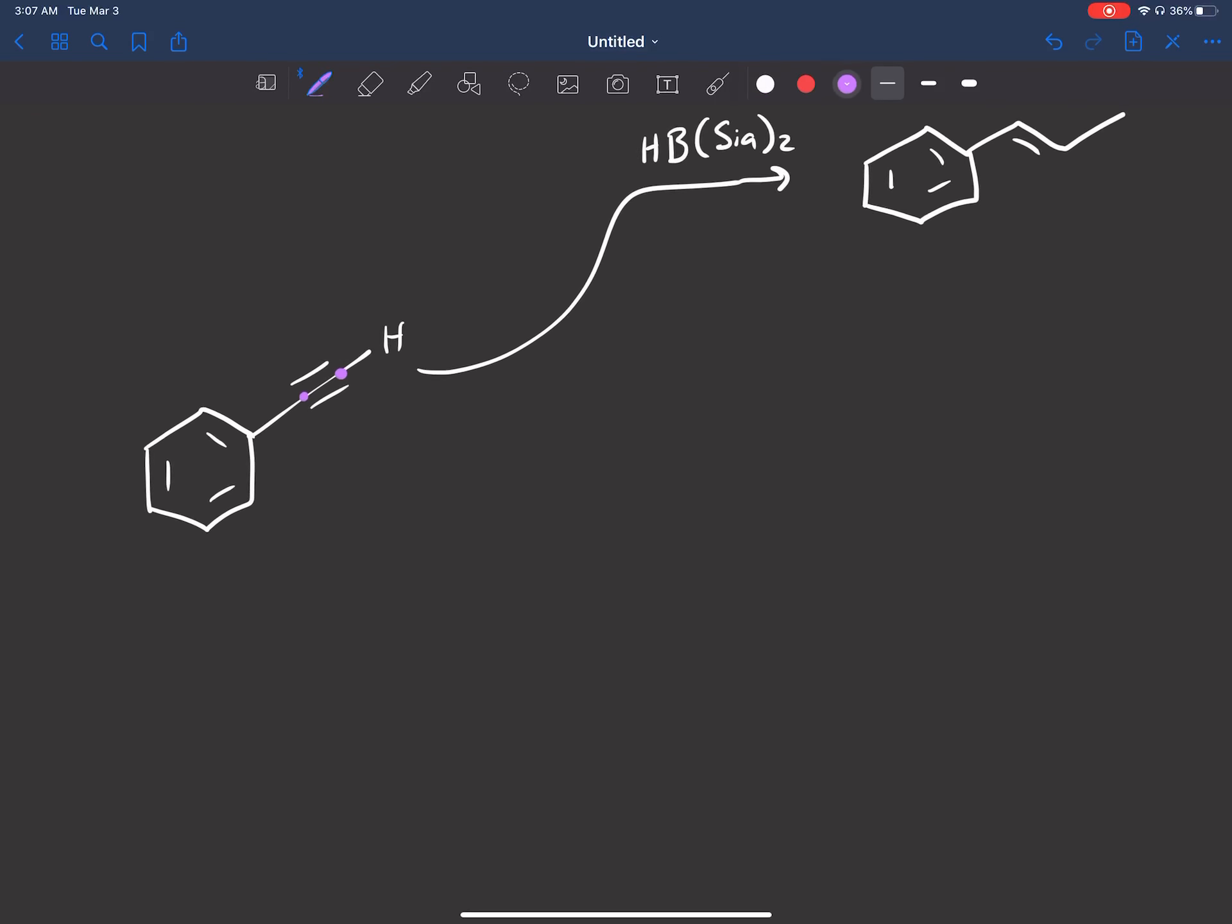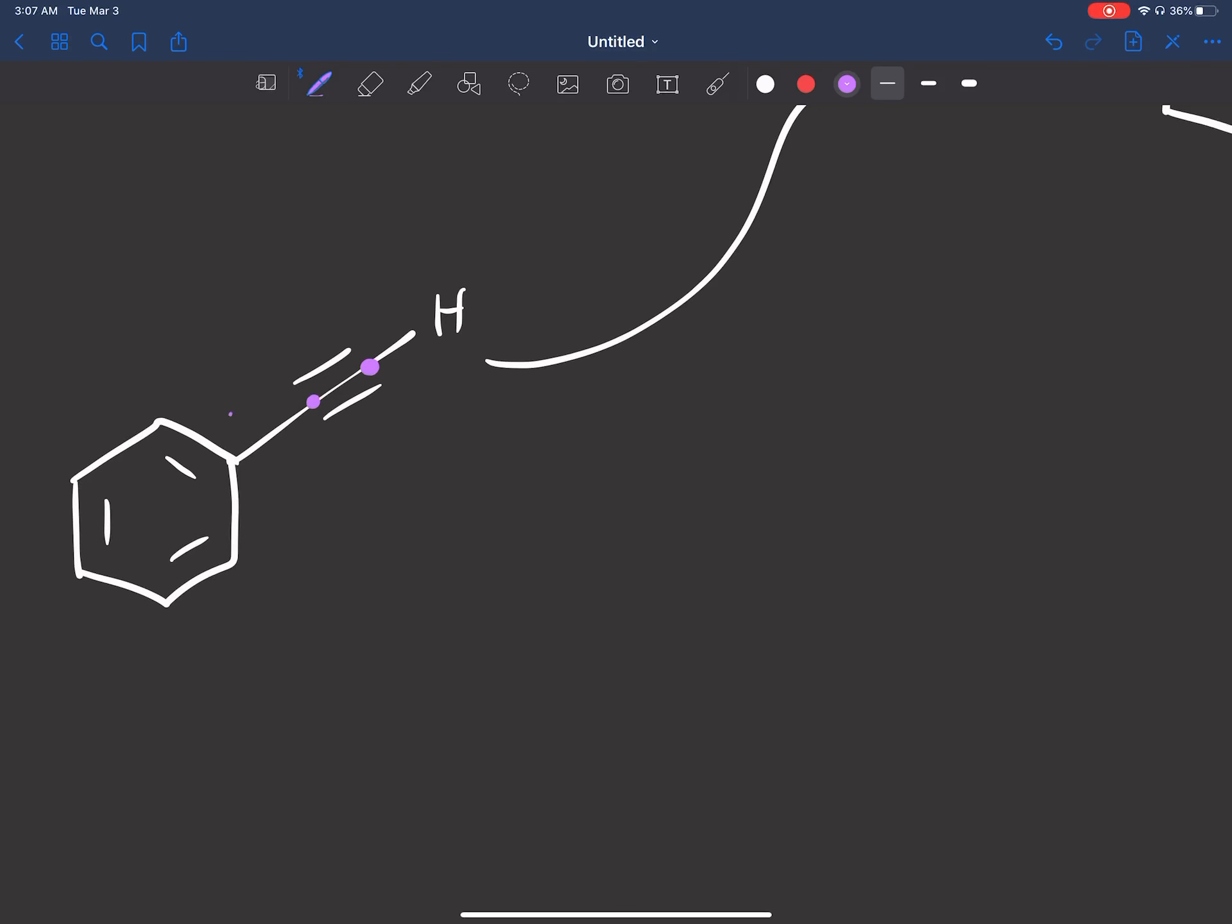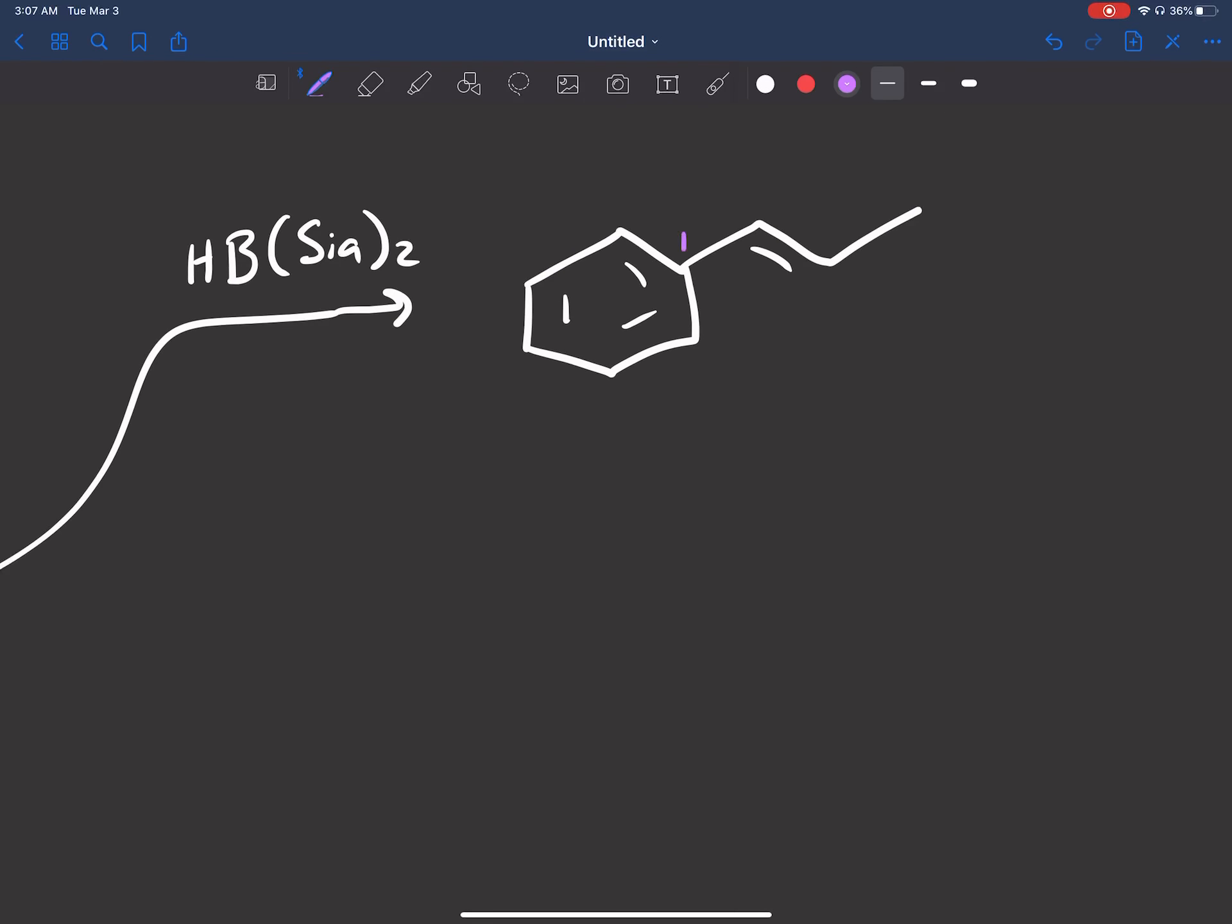So you see I have a double bond now. Let me count my carbons just so I can make it very clear. Let's call the carbon one, two, three. Carbon one, two, three.